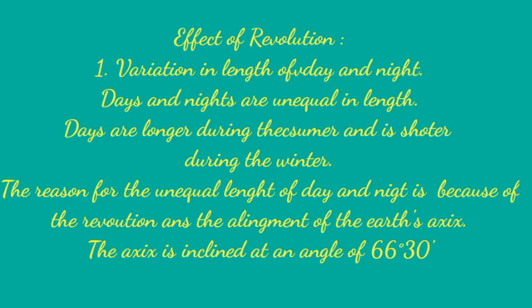This inclination of the Earth's axis remains in the same direction throughout the entire revolutionary movement — that is, the axis maintains parallelism throughout. This is the reason why the length of day and night is not the same everywhere, and this unequal length can be well understood with the help of the following topics.